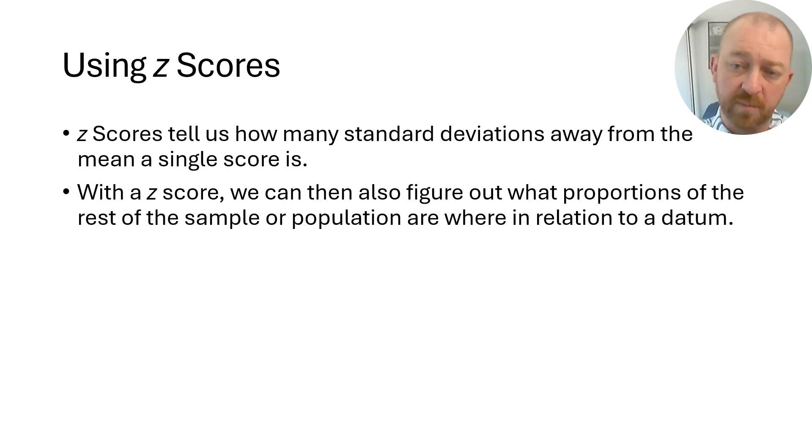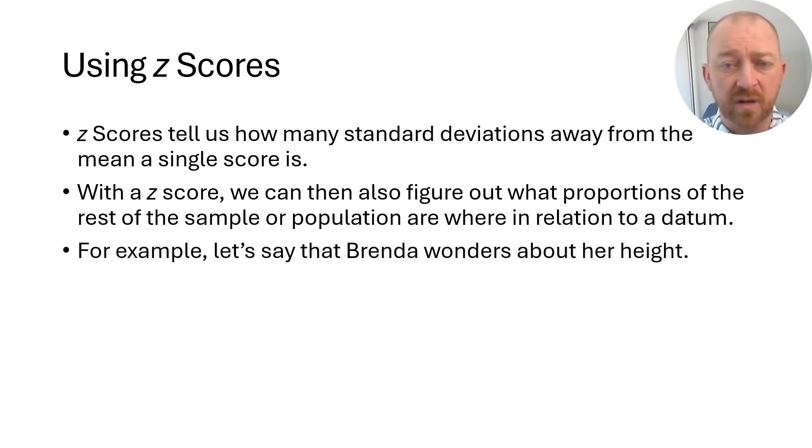What's really nice, as we saw a couple of lessons ago, is that we can also take what we understand about standard deviations and how scores fit into distributions with standard deviations, and now we can see just how far away, in terms of standard deviations, a score is, which gives us the percentile. If we know what proportions of the distribution fall within certain distances from the mean, like one standard deviation above and below includes sixty-eight percent of the distribution, we can use that same idea to figure out what other proportions fall within different distances of the mean.